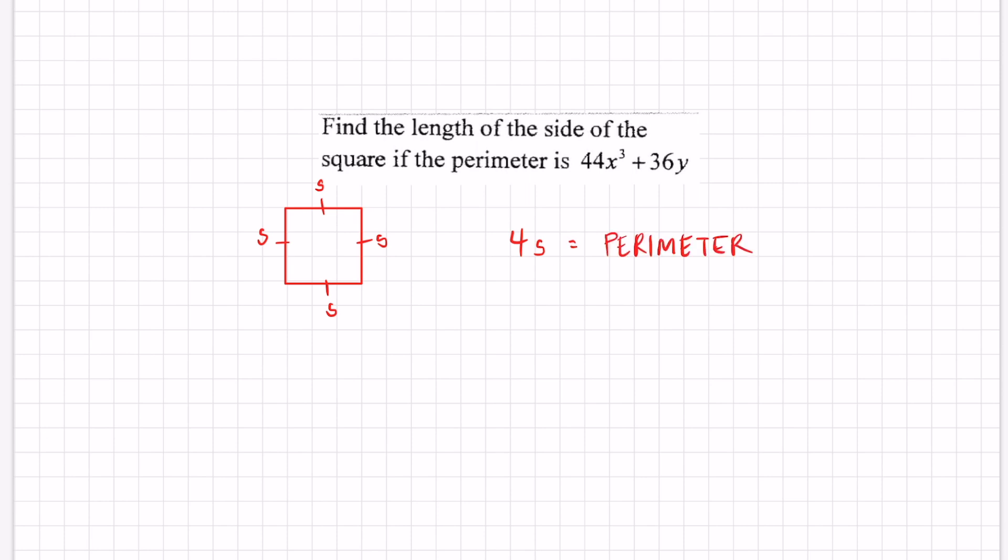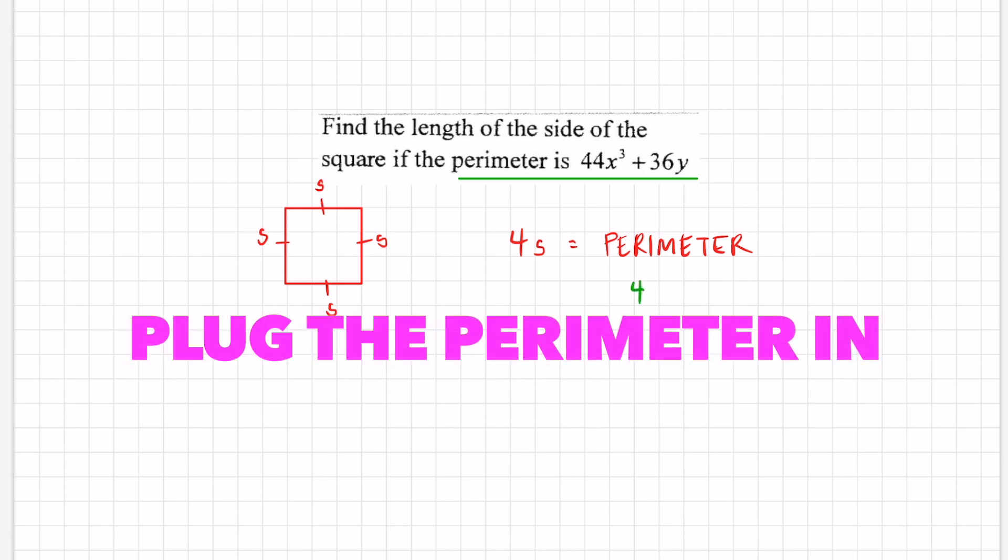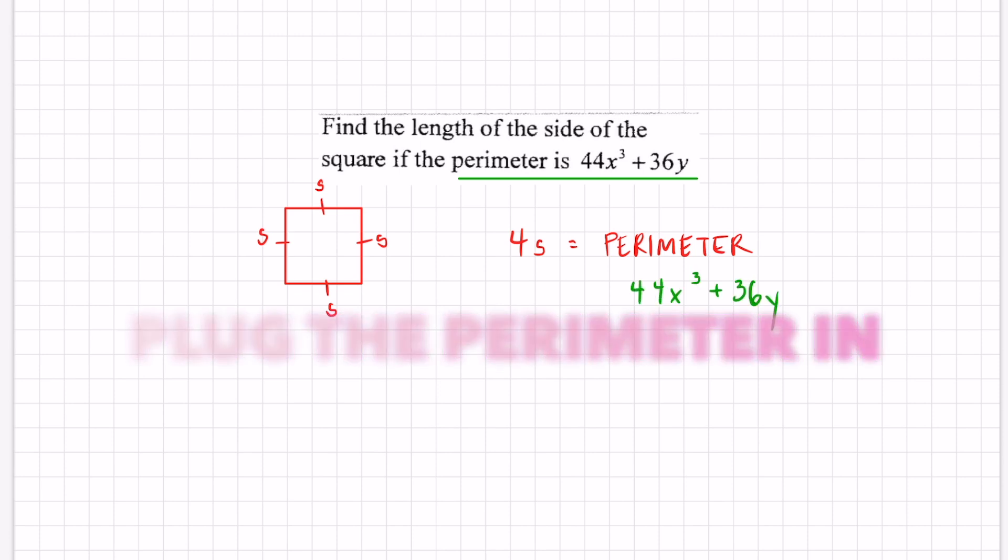Now let's go back to that word problem and see what we're given. It says right here that the perimeter is 44x³ + 36y. I'm going to write that right under here and what are we trying to find out? It says find the length of the side and I got an equation right at the bottom. It says 4s equals the given perimeter and the goal here is to solve for s.